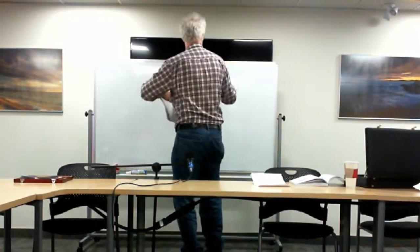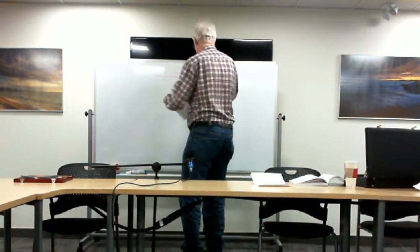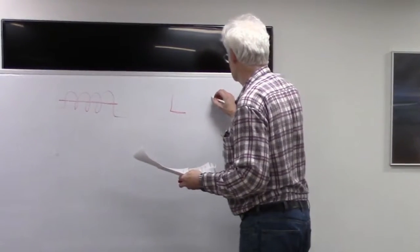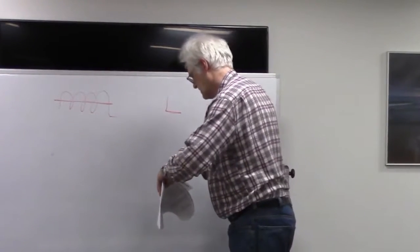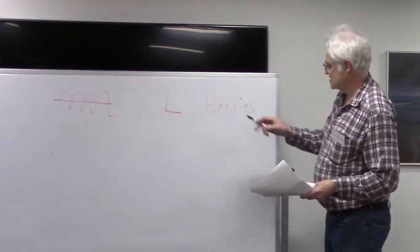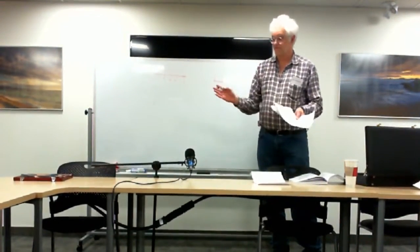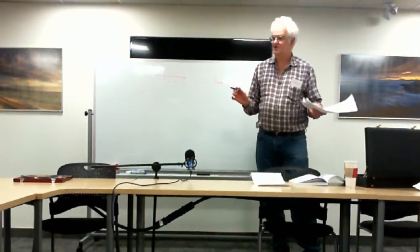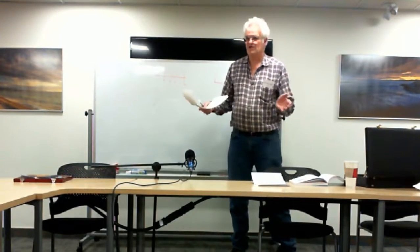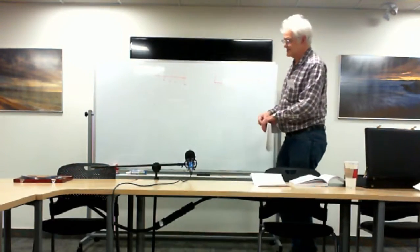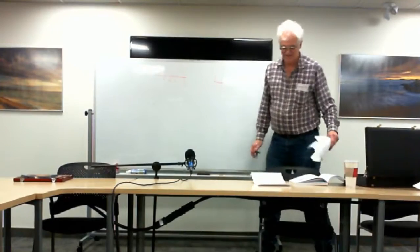The electronic symbol for inductance is the capital letter L, and it's measured in henries. The basic unit is the henry. Typically you'll see millihenries or microhenries. A milli is one-thousandth of a henry and a micro is one-millionth of a henry — or in scientific notation, ten to the minus three and ten to the minus six.